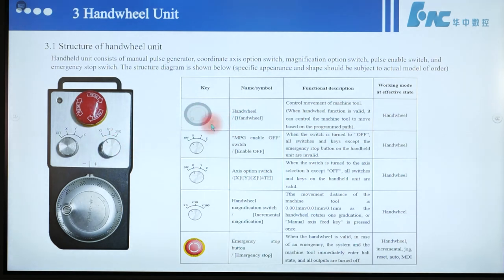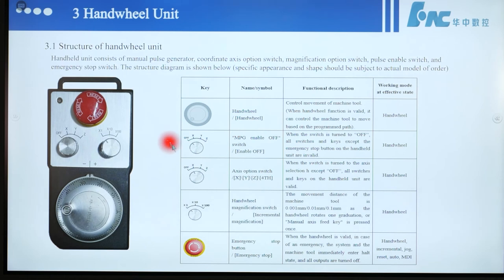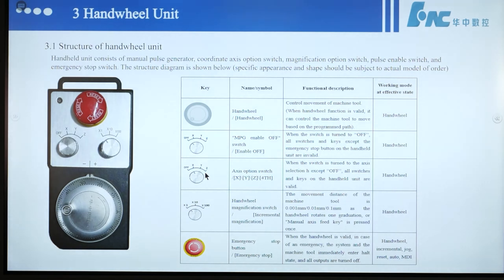This is the handwheel — it controls movement of the machine tool. When the handwheel function is valid, it can control the machine tool to move based on the programmed path. This is the MPG enable off switch. When the switch is turned to off, all switches and keys except the emergency stop button on the handwheel unit are invalid. The axis option switch selects which axis to control.